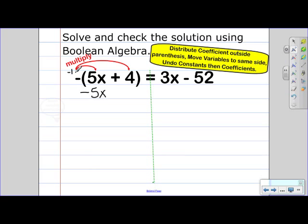And if we multiply negative 1 to a positive 4, we get a negative 4. And then we can write the rest of our equation. So 3x minus 52.